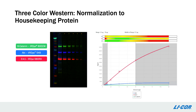Normalization can also be done using housekeeping proteins, where all three channels detect specific protein targets. It's important to detect all targets in a range where each target gives a linear response. As this linearity graph shows, it can be challenging to find an optimal range for all three targets, but it can be done. When using protein targets in all three channels, we recommend detecting the most highly abundant target in a visible channel and using the IR channels for lower abundance targets.